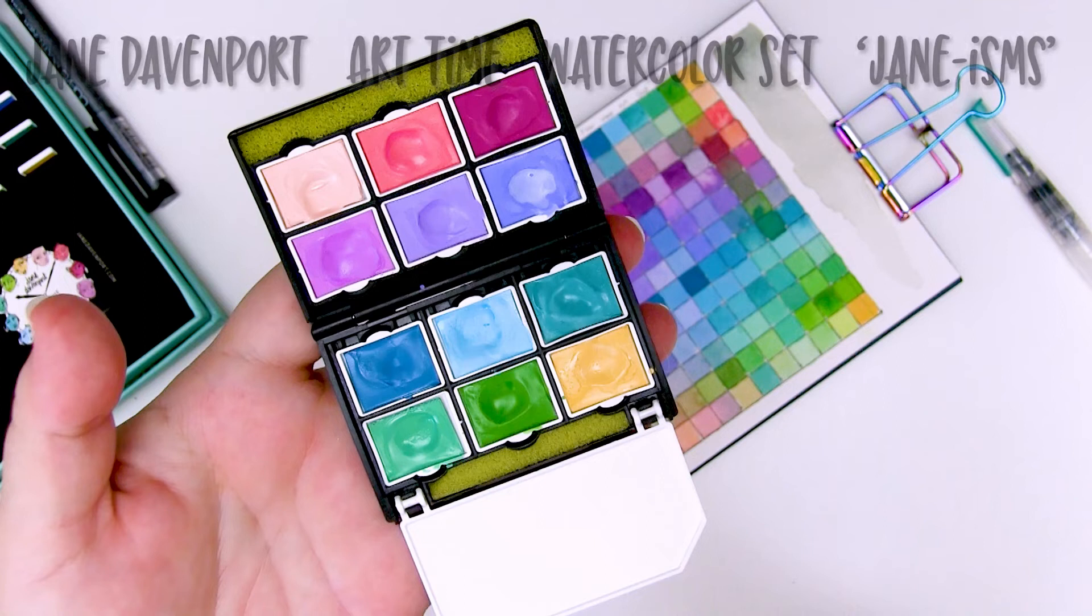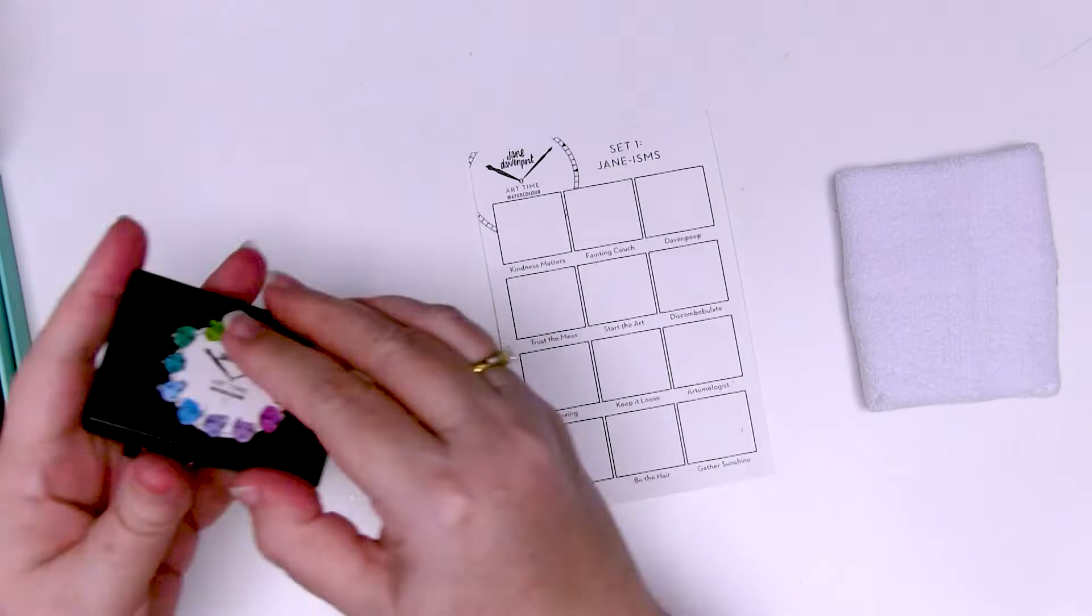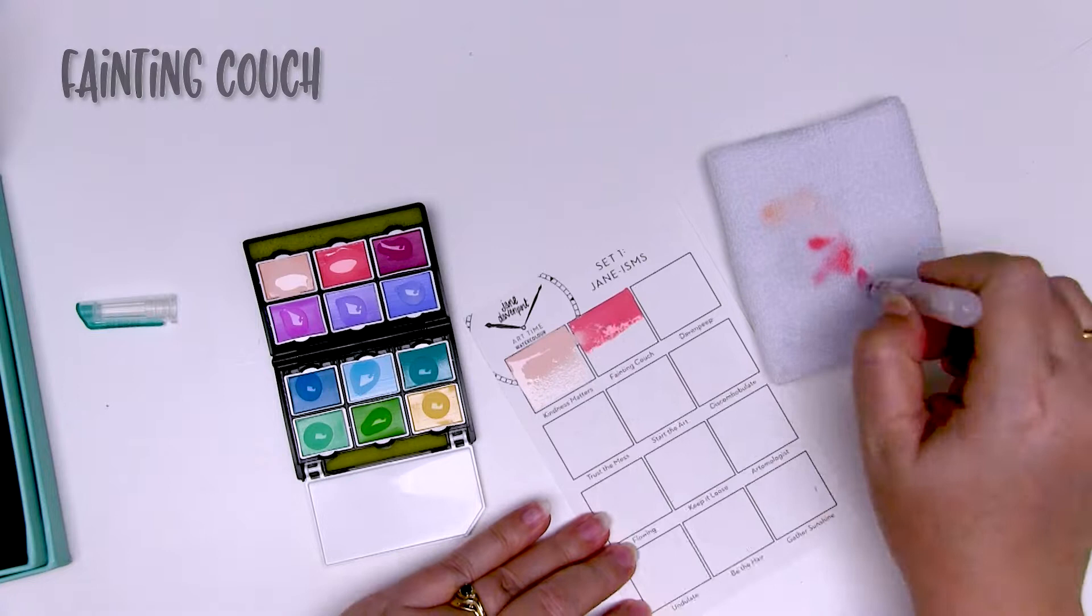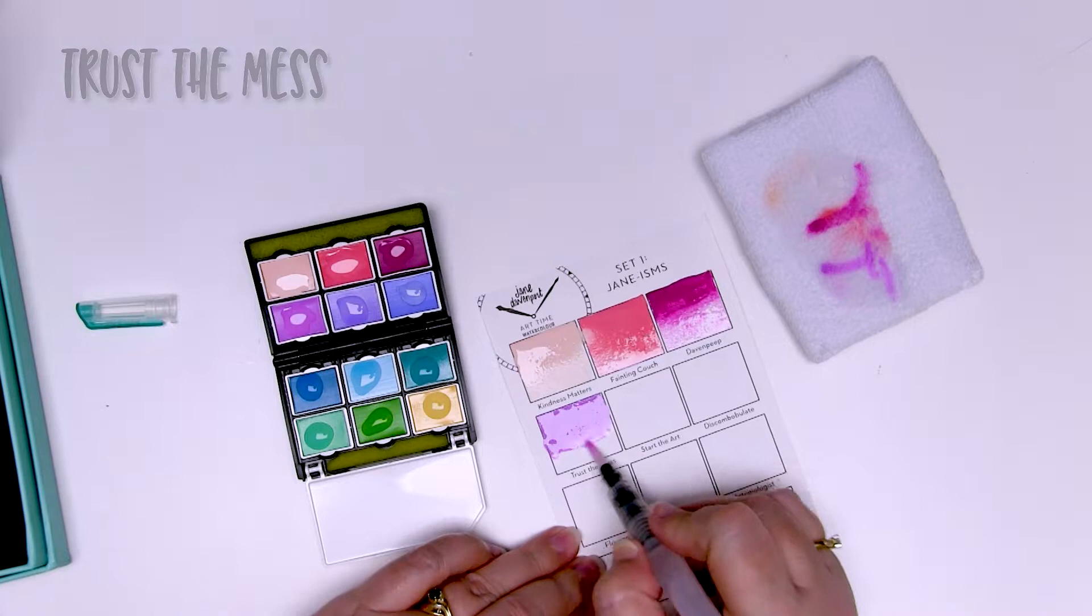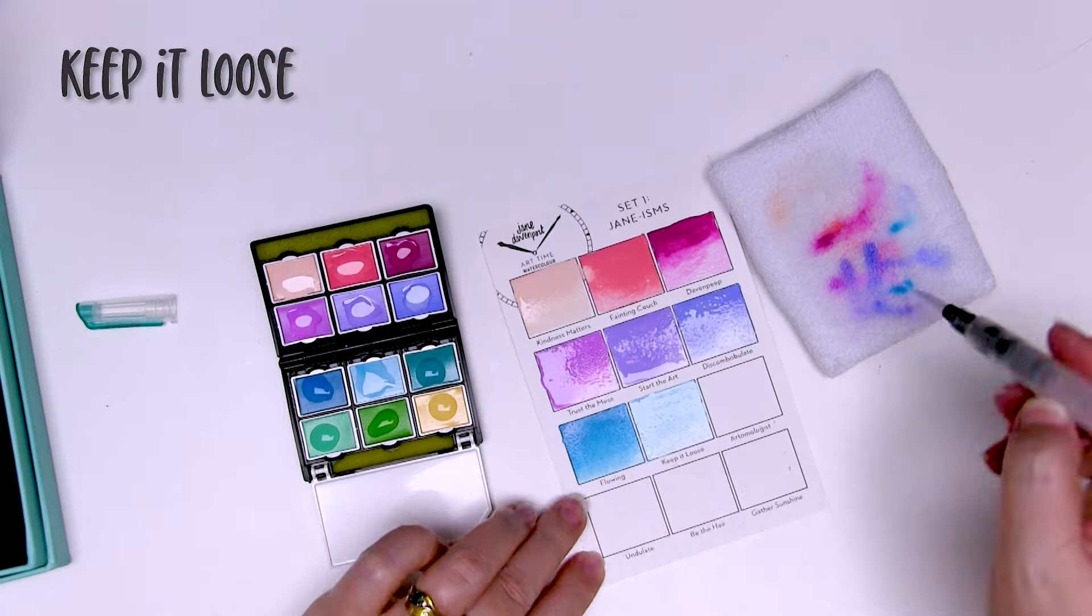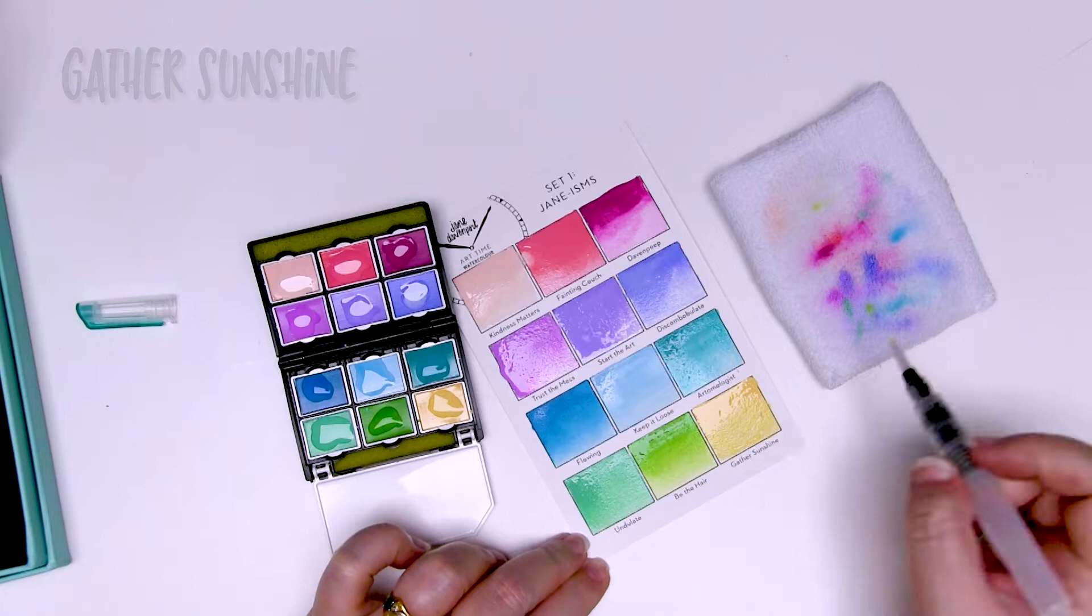So this is the Jane Davenport Art Time Watercolor set called Jane-isms. It's a set of 12 watercolor pans that are beautiful and opaque, nice and creamy, and come in a stunning little palette with a really useful little wrist band. I haven't seen anything like these. The colors are bold and bright and you can mix these 12 colors to get over 120. Yes, over 120 new shades. Now a lot of them are blues and greens and turquoises, but hey, I love those colors. Let's give it a workout.